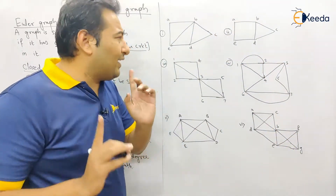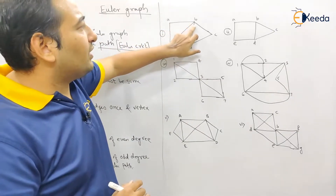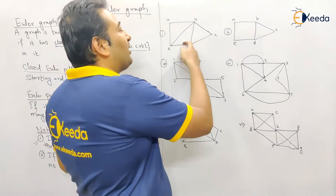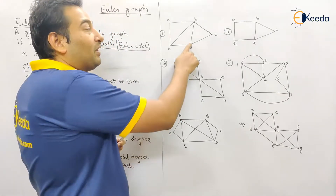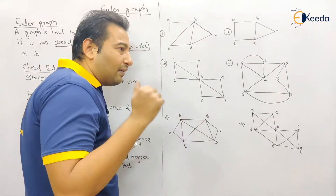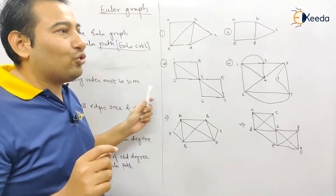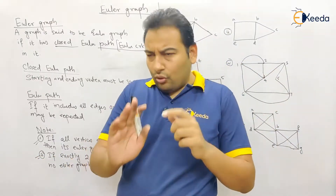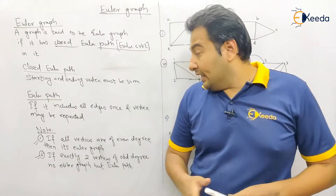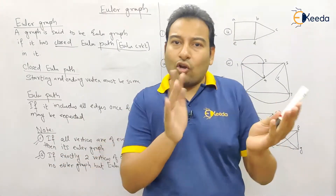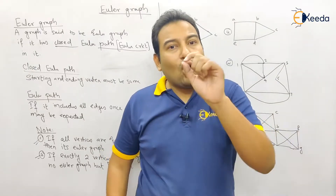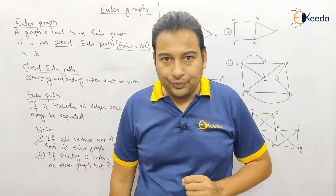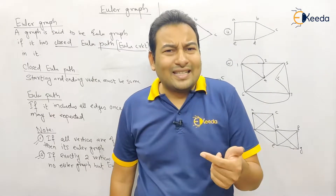For example, checking degrees: if one vertex has degree 4 (even) and another has degree 3 (odd), it is not an Euler graph, because one vertex has an odd degree. The condition for an Euler graph is all vertices must have even degree. If there is even one vertex with an odd degree, it cannot be an Euler graph.